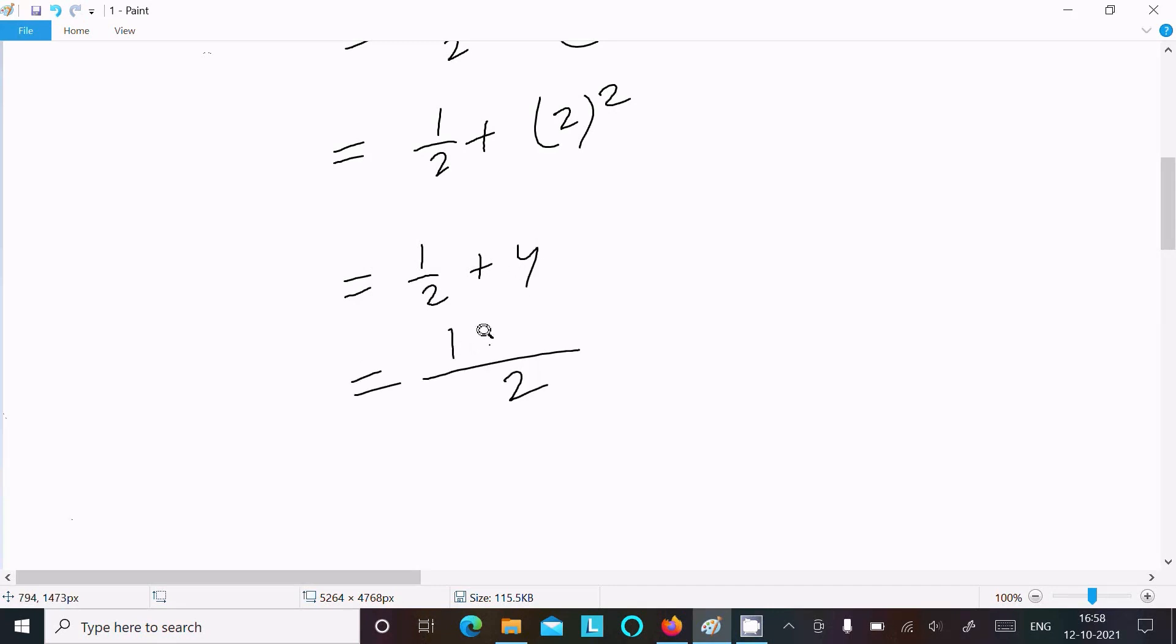2 cancels here, so 1 and 2 cancel, so this is now 8. So here the value comes to